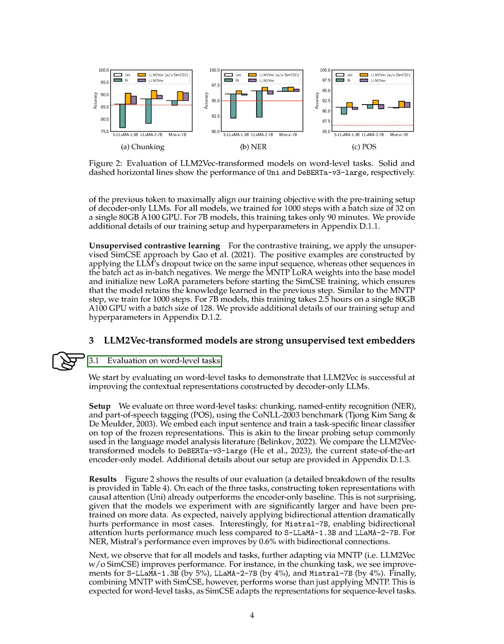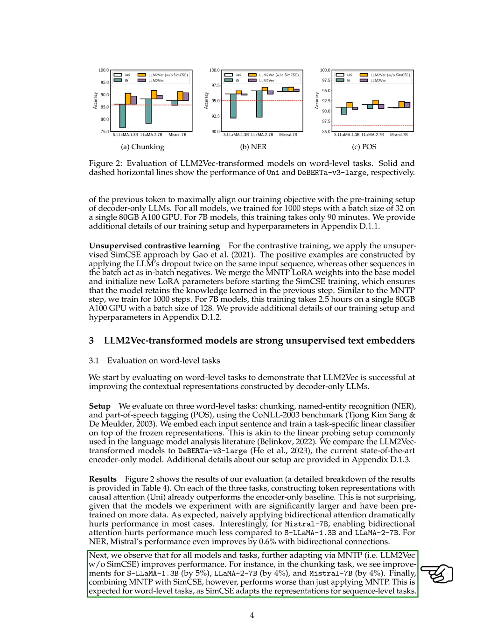We evaluated the models on word-level tasks such as chunking, named entity recognition (NER), and part-of-speech tagging (POS) using the CONLL-2003 benchmark. By training task-specific linear classifiers on top of the frozen representations, we compared LLM2-VEC transformed models to DeBERTa-V3-Large, the current state-of-the-art encoder-only model. The results showed that constructing token representations with causal attention already outperformed the encoder-only baseline on all three tasks. Naively applying bidirectional attention significantly decreased performance in most cases, though Mistral-7b showed less performance decrease. Adapting via MNTP improved performance for all models and tasks. However, combining MNTP with SIM-CSE performed worse than just applying MNTP, as SIM-CSE is more beneficial for sequence-level tasks.